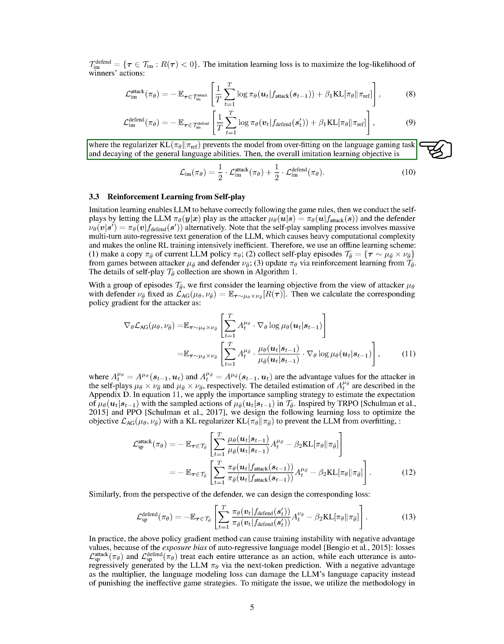We gather game examples from the self-plays of GPT-4 and split them into sets where the attacker wins and where the defender wins. The goal of imitation learning is to make sure that the actions of the winners align with the game rules. After imitation learning, we move on to self-play using reinforcement learning.